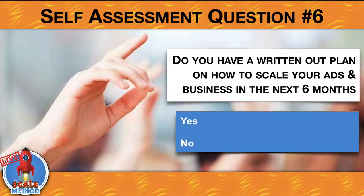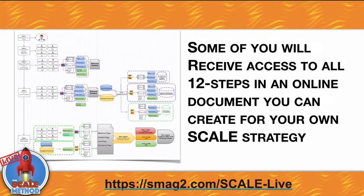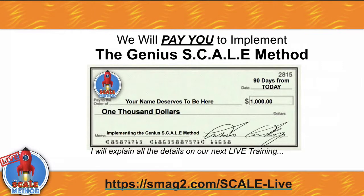Self-assessment question number six: do you have a written out plan on how to scale your ads and business in the next six months? Just yes or no. Reevaluate all six of your answers to find out where you are right now and how we can help. I'm going to give you a digital copy of the mind map steps one through five when you join our next upcoming live training. Some of you will receive access to all 12 steps in an online document to create your very own SCALE strategy, and people who implement the SCALE method will be paid $1,000.